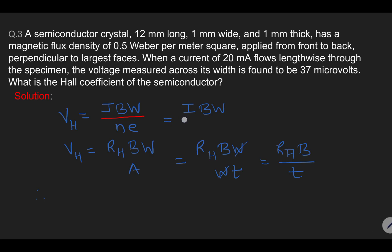We rewrite current density in terms of current as I upon A, N into E. Now 1 upon N is the Hall coefficient, so we replace it with the Hall coefficient RH, and area gets replaced with width into thickness. Width cancels, leaving the formula: VH equals RH times I times B divided by T.